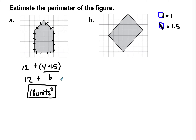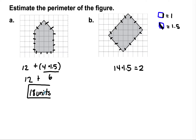For this next one, everything is a slant: one through fourteen — I have fourteen slants, times one and a half, which gives me a total of twenty-one. The label is units — not square units. Area is always in square units, but perimeter is just plain units, since it's a side length going around the outside of the shape.